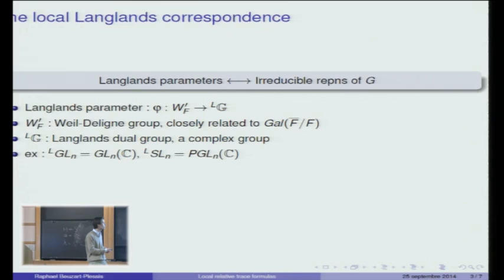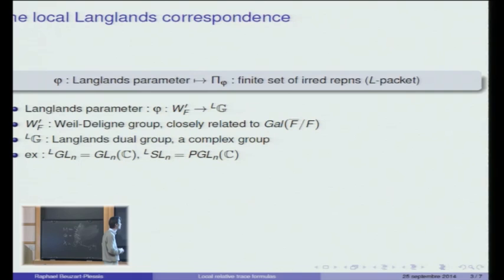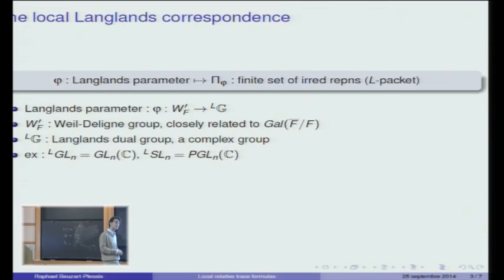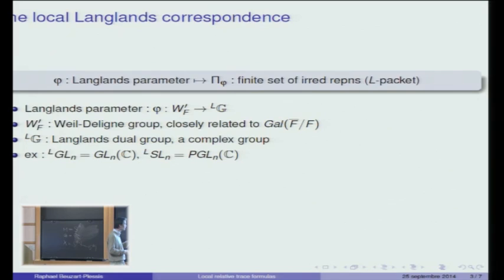Now that you know what a Langlands parameter is, I can be more precise about what the local Langlands correspondence says. More precisely, there should be a map that associates to every Langlands parameter not quite a single irreducible representation of G, but a finite set of them called L-packets — I denote the map as phi mapping to pi_phi. This map has to satisfy a certain number of expected properties: for example, the L-packets should give a partition of the set of irreducible representations of G, and the correspondence should be compatible with certain arithmetic invariants on both sides. This correspondence is still a conjecture in general, but it is known in some cases.